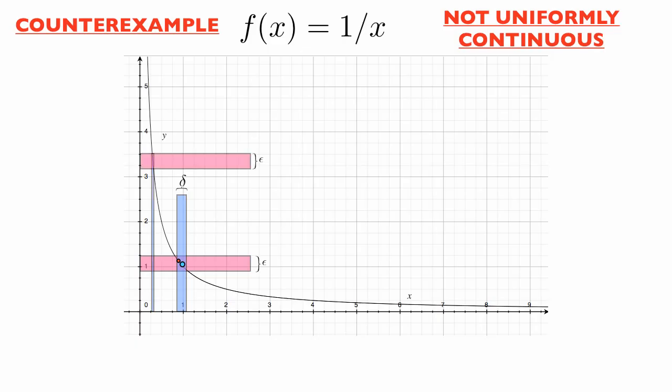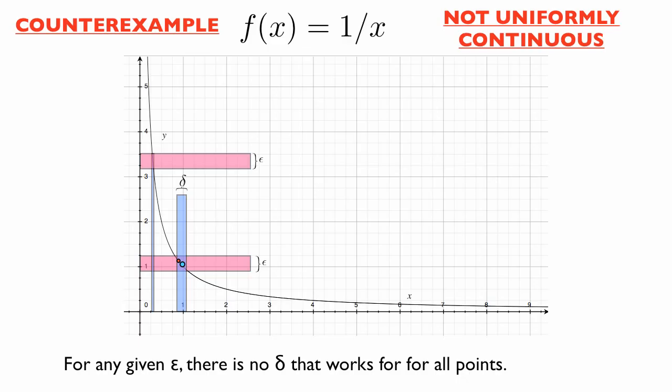For example, suppose we use the same delta. In order to guarantee that our points will be within the same epsilon, delta will have to be much smaller — the distance between our two points on the x-axis will have to be much smaller than in the previous case. In fact, there is no delta, however small, that will work for every area of this curve. So, for a given epsilon — which is our epsilon in this graph — there is no delta that will work for all the points in the graph. The delta will have to become smaller and smaller the further left we go, in order to guarantee that the images of our two points within that delta range are going to be less than epsilon.